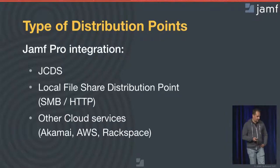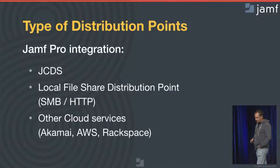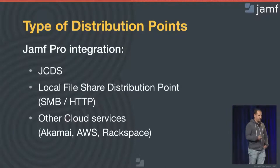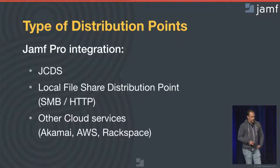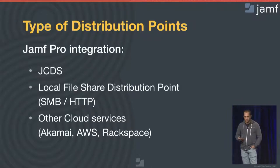I kind of omitted AFP from the slide — when I was making the slide, I was already in the mood of upgrading to High Sierra, because with the launch of APFS, we kind of got rid of support for AFP. But for those still managing an environment where devices aren't upgrading immediately to macOS 10.13, you might still be using AFP. So two types of distribution points: cloud, whether or not it is JCDS, and local file share.